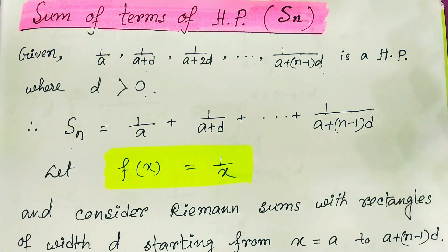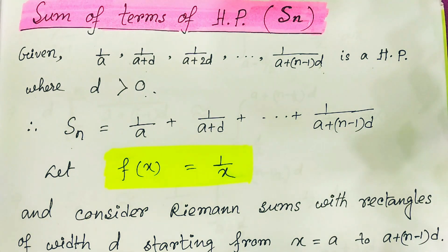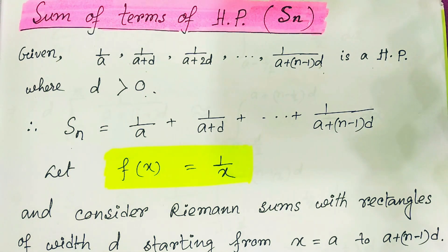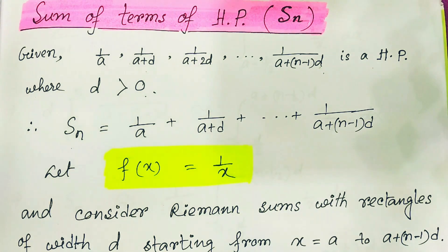Hi everybody, welcome to my YouTube channel Easy Mathematics. This video is about finding the sum of the HP series. If any given harmonic progression is there, and we add its terms, what should be the summation of all those terms? That is represented by Sn, and that Sn we are going to find out.